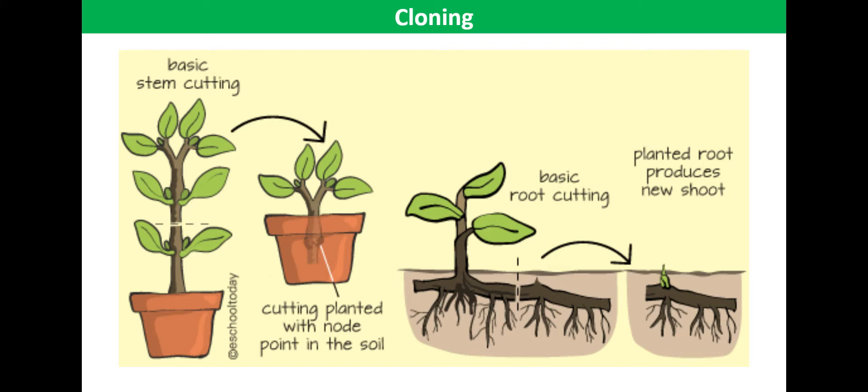Some plants such as blackberries will take root really easily, whereas other plants may require some further treatment. Dipping the cut stem in rooting hormone helps to stimulate root growth. This technique of making cuttings can be used to produce large numbers of plants really quickly.